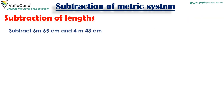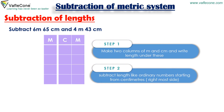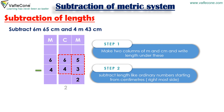Subtraction of length. Subtract 4 metres 43 centimeters from 6 metres 65 centimeters. Step 1: Make 2 columns of metre and centimetre. Step 2: Subtract lengths like ordinary numbers starting from centimeters. Place 6 and 4 in the metre column and 65 and 43 in the centimetre column. Starting from centimeters: 5 minus 3 equals 2, then 6 minus 4 equals 2. The answer is 2 metres 22 centimeters.